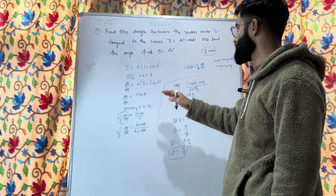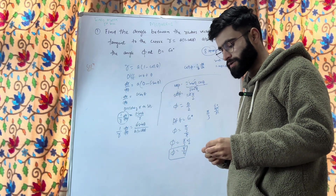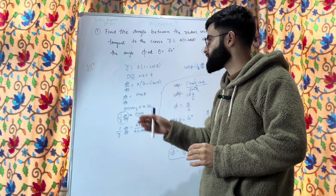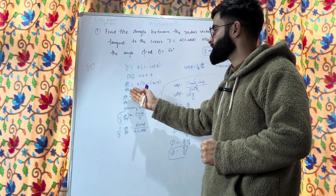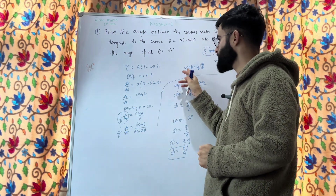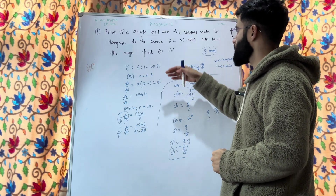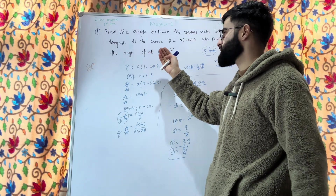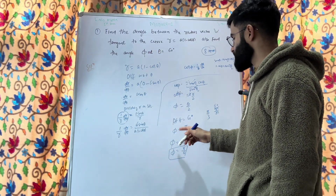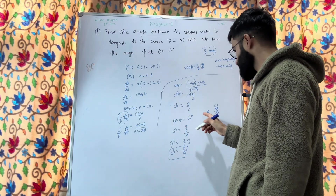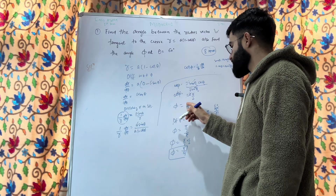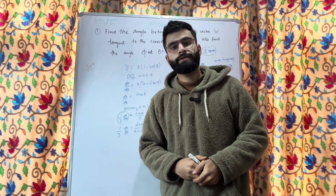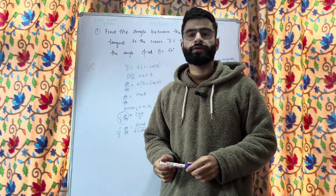This is the answer for this 8-marks VTU question — it is a very simple one. The procedure is: differentiate the given equation, then divide both sides by r to get cot φ, and simplify using trig identities to find φ. For the second step, substitute the given θ value. In the next lecture we will see another problem. Please share this video with your friends. Thank you.